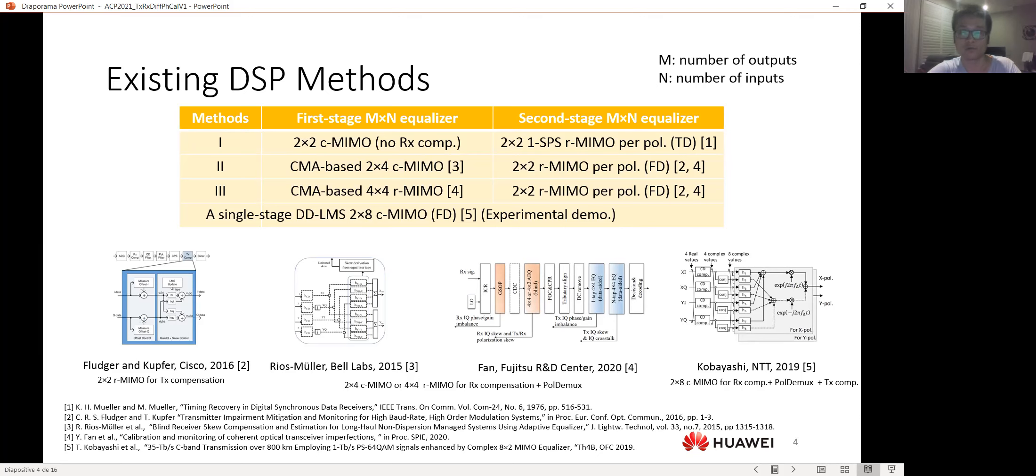While the second stage MIMO, which is a 2x2 real MIMO for polarization, can allow us to compensate the transmitter impairment and also measure the transmitter skew.